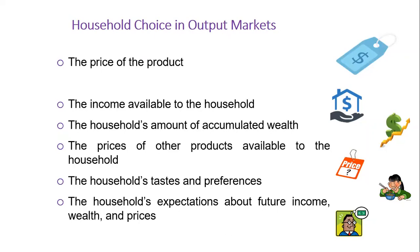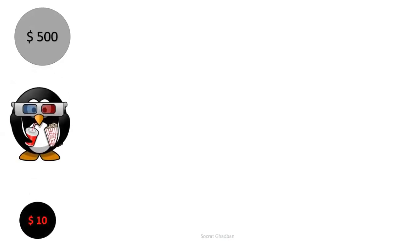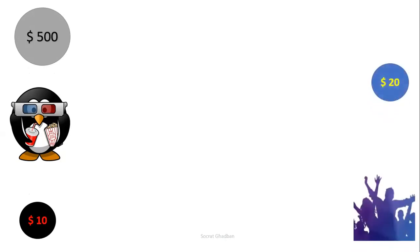Now, in order to illustrate the concept of budget constraint, we consider Sam as having a budget or an income of $500. And he can make two choices. We have an assumption that he can make two choices between going to the cinema, and each time he goes to the cinema he pays $10, or assisting to a rock concert where he has to pay $20 for every time he goes to the rock concert.